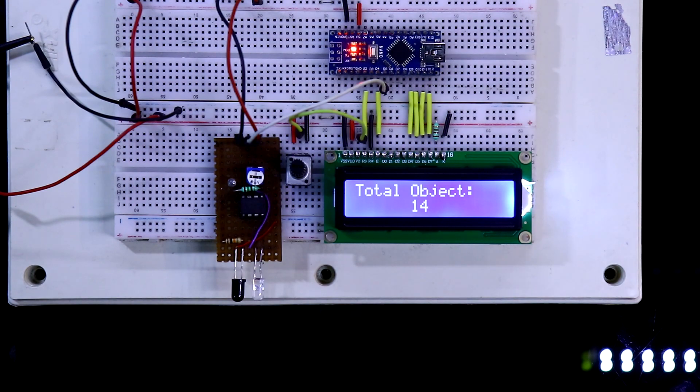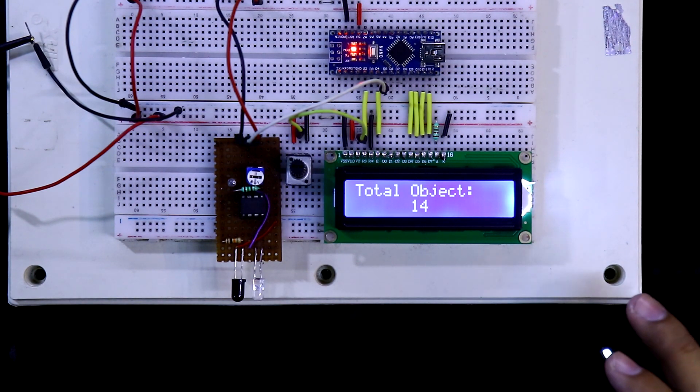So this is how you can make an object counter using this display and the Arduino.